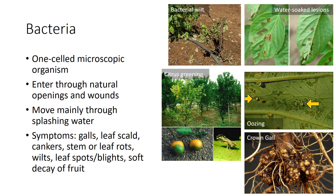Bacterial infections often produce water soaking around areas where the bacteria entered the leaf. Later, the underside may look dark and greasy. Sometimes you can see bacterial ooze coming from a lesion, most often in the morning. Symptoms include galls, leaf scald, cankers, stem or leaf rots, wilts, leaf spots or blights, scabs, soft decay of fruit, roots, and stems, and sour-smelling roots, stems, or fruit.